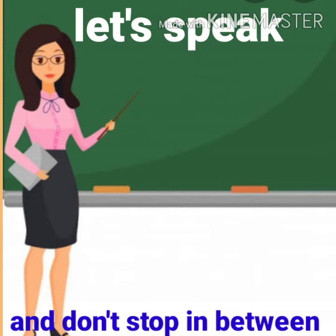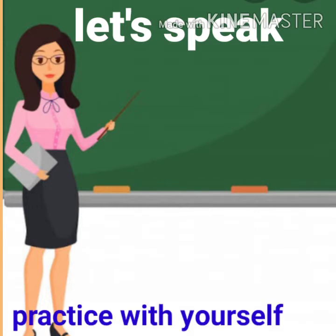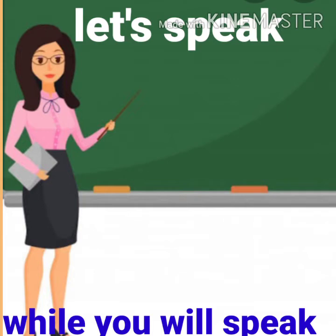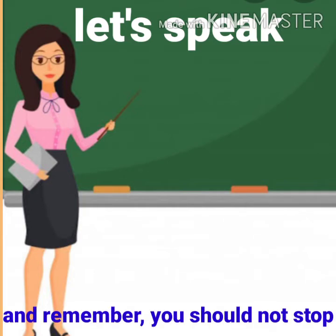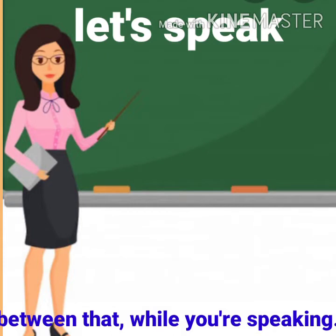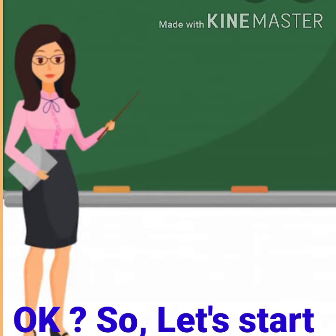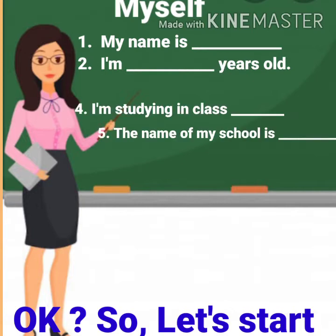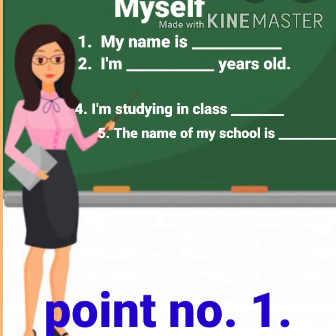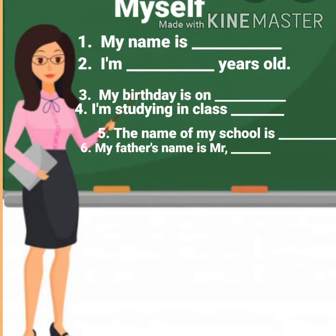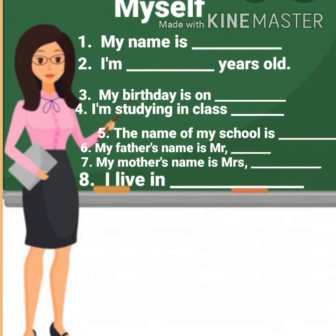This is conversation practice about yourself. While you are speaking, remember you should not stop in between. So let's start. Point number one: 'My name is dash' — in this dash you have to speak your own name. Number two: 'I am dash years old' — in this dash you have to mention your age.